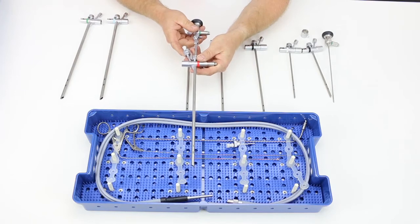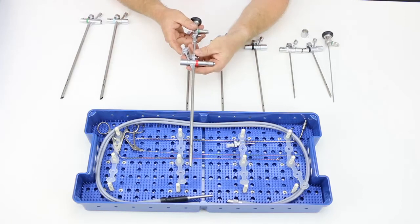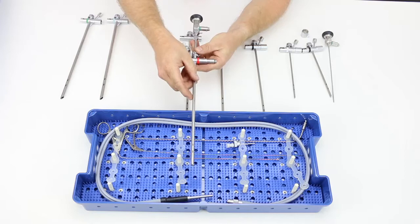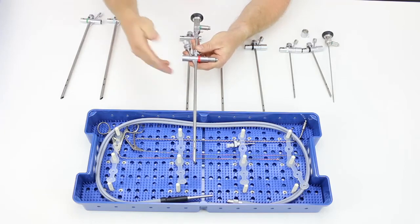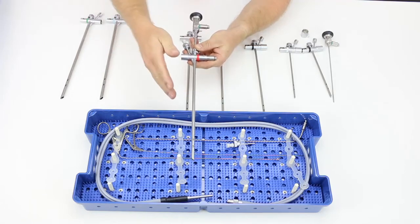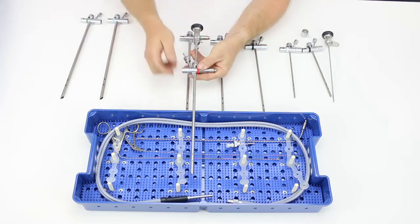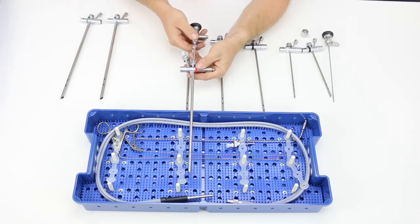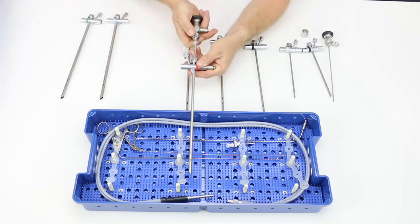Moving to the next stage of the procedure, once you have the paediatric bronchoscope into the patient's airway, you're ventilating, patient is stable, foreign body is visualised, the next step is to load the telescope onto the optical forceps.